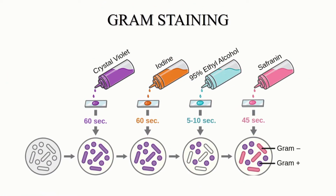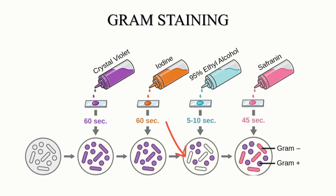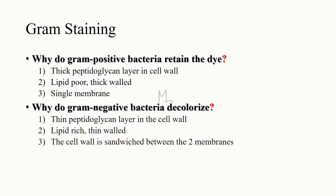After decolorization, adding the counter stain safranine to both results in the gram positive remaining purple while the gram negative takes on the pink or red color. In terms of timing: crystal violet dye is applied and left for 60 seconds, then the slide is washed. Iodine is applied for 60 seconds, then washed. Ethyl alcohol is applied for 5 to 60 seconds, then washed. Finally, safranine is applied for 45 seconds.